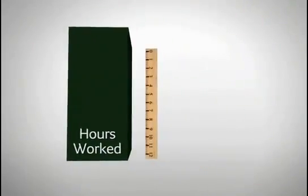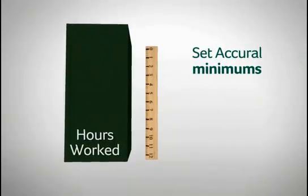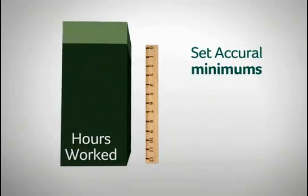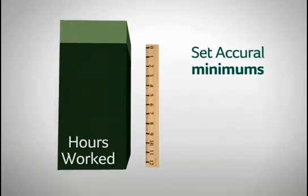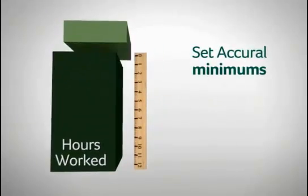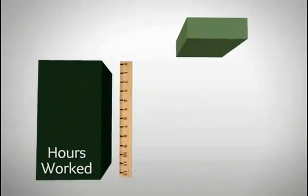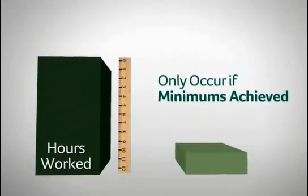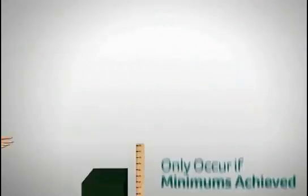Also, manage benefit accruals based on the hours your employees worked. For salaried, union, and part-time employees, 4.5 will compare those numbers with whatever minimums you establish, and accruals will only occur if the conditions you set are achieved.